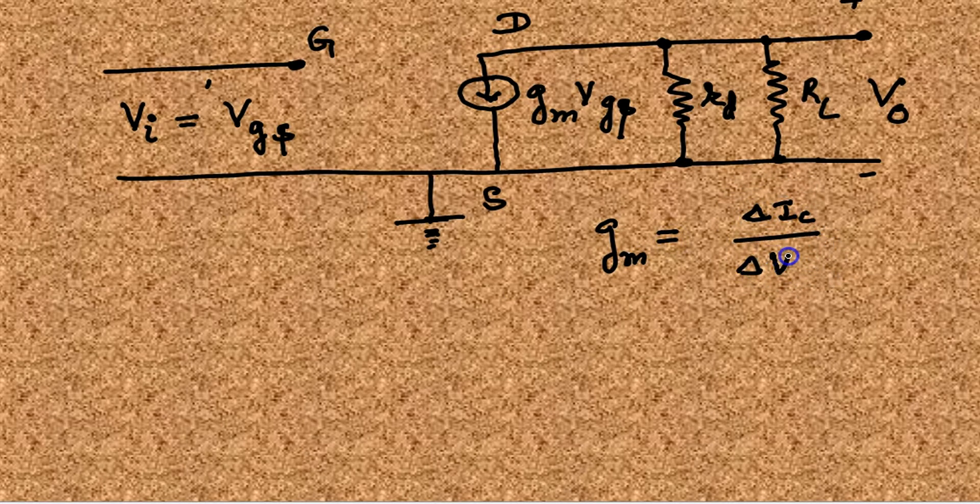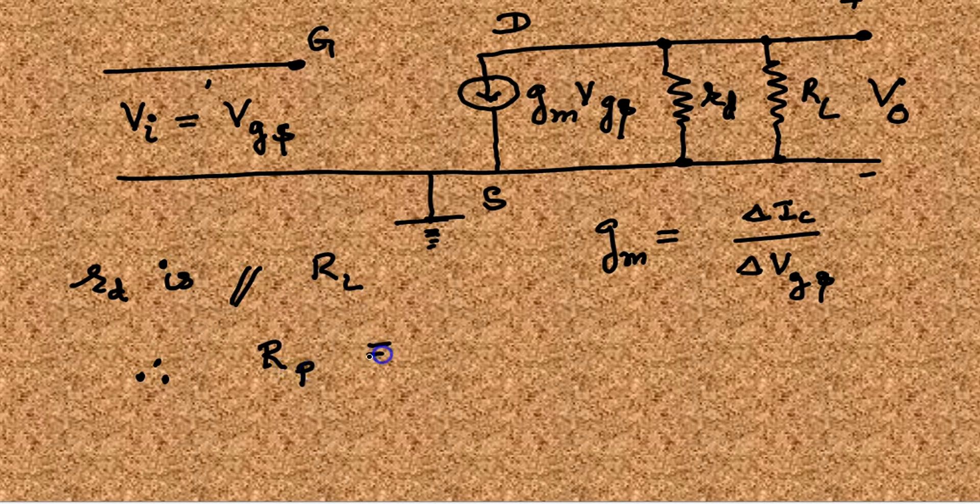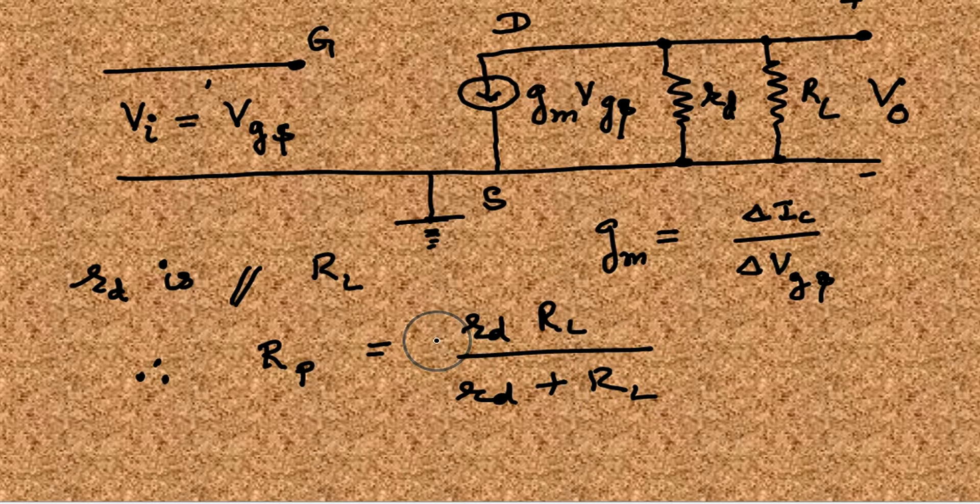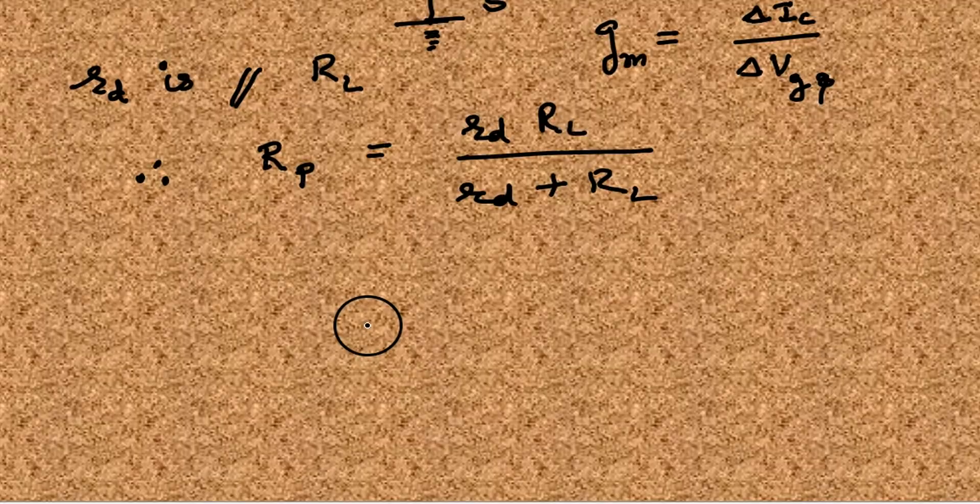The GM is by definition conductance, mutual conductance, delta ID over delta VGS. VGS means gate-to-source voltage. In the equivalent diagram, Rd is parallel to RL, so the parallel combination becomes this.